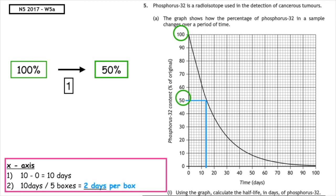If we look at what we've plotted on this x-axis, we can see that the line is two boxes after 10. So that means that the half-life is a total of 14 days for phosphorus-32.